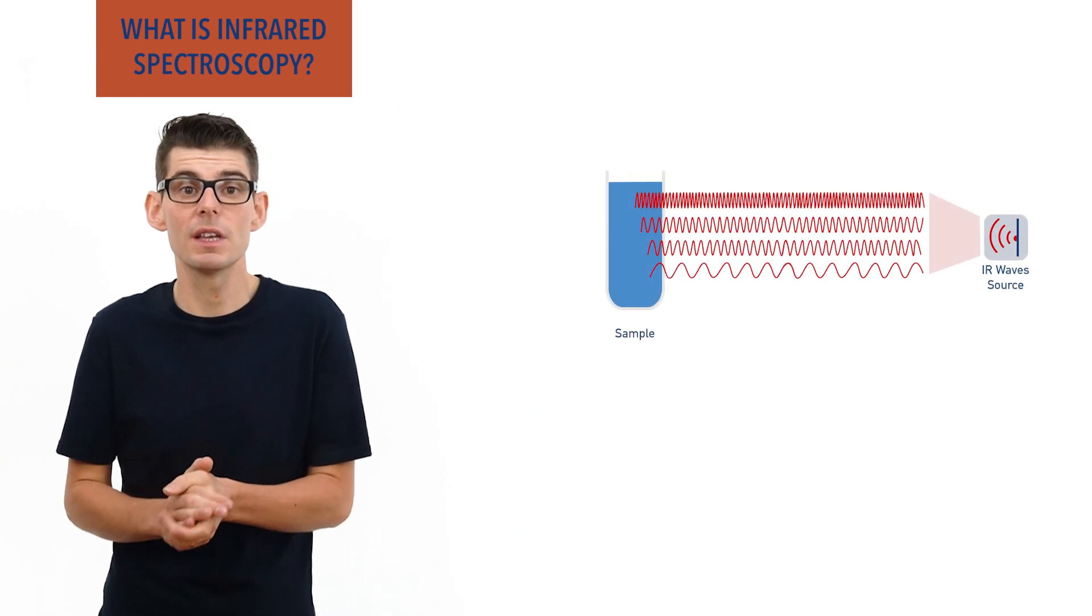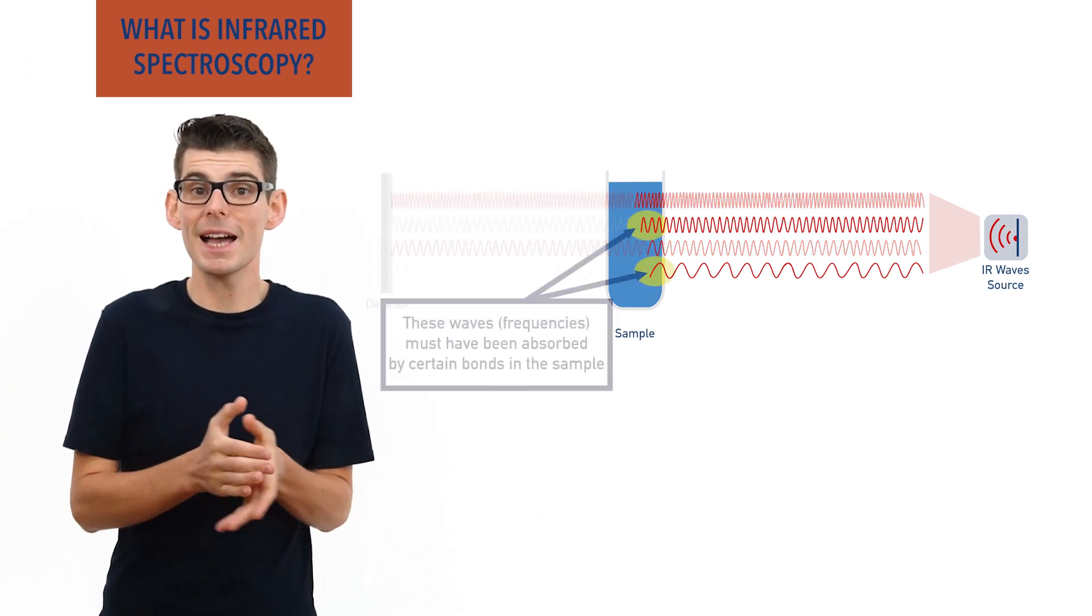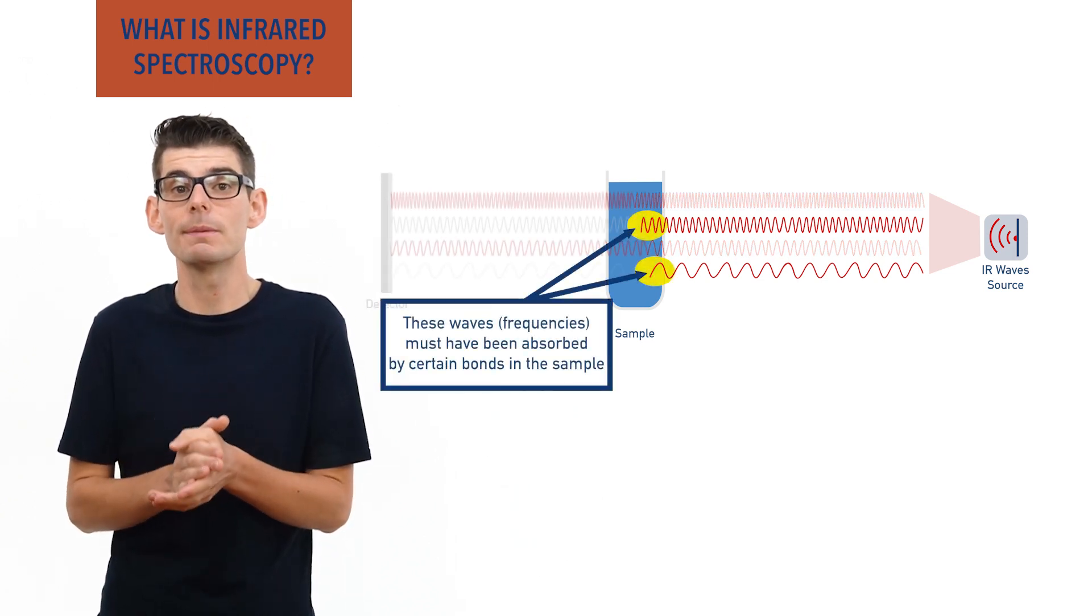By bombarding a sample with a complete range of IR waves, the wavelengths of IR that get absorbed by the sample can be analyzed and the types of bond in a molecule found.